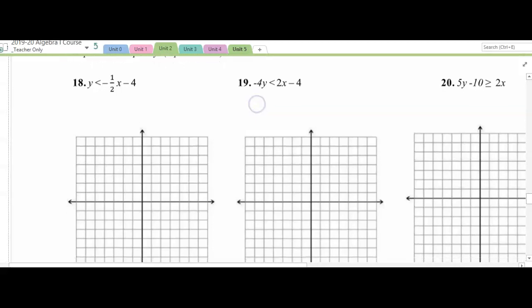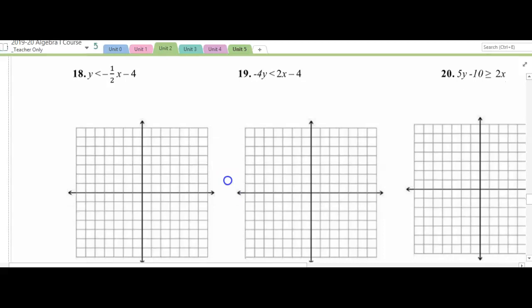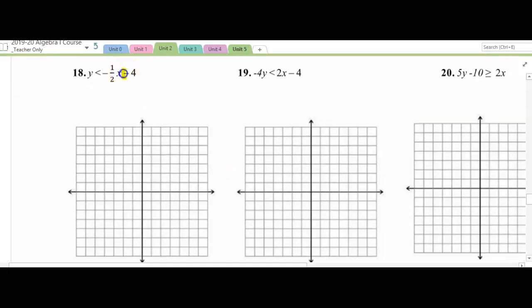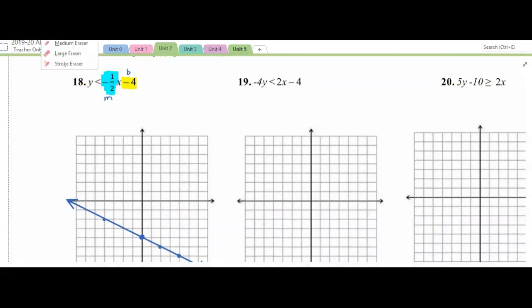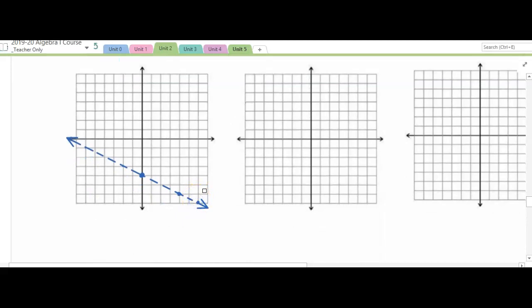When we're graphing inequalities, it's much the same, except we have to shade when we're finished, and we have to consider if our line is going to be solid or dashed. I'm going to begin with my b value and move, and then I'm going to go down 1, right 2. That'll fill in my line. So far, nothing's changed from the examples we just did above. The difference is, this is a less than symbol, which means we want a dashed line. So I'm going to go back and make it dashed. I prefer to make a solid line and then go back and make it dashed afterward. I think it keeps it a little straighter than trying to draw a dashed line.